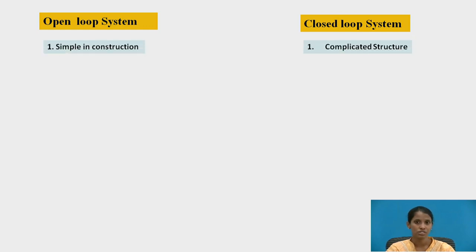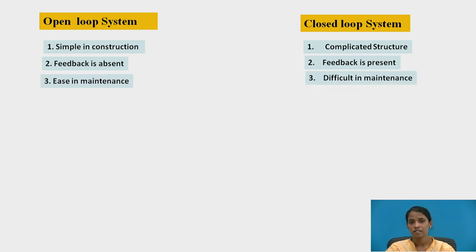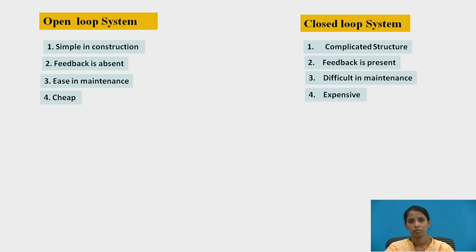Now let us compare open loop and closed loop control systems. Open loop systems are simple in construction with few components and no feedback element, whereas closed loop systems are complicated in construction. Feedback is absent in open loop systems but present in closed loop systems. Open loop systems are easy to maintain due to fewer components, while closed loop systems are difficult to maintain. Open loop systems are cheap in cost, whereas closed loop systems are expensive.